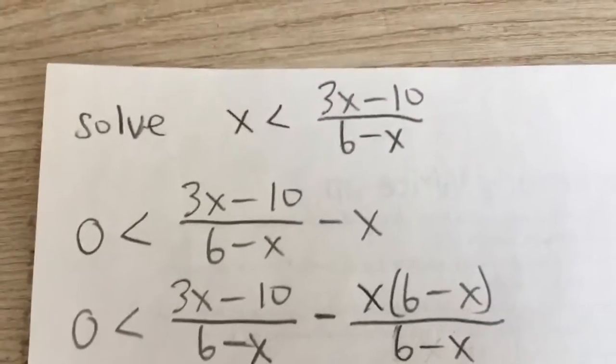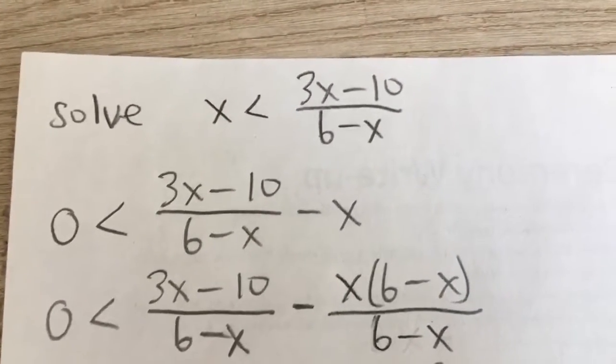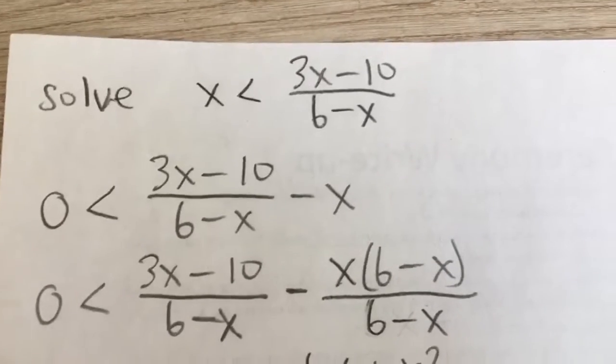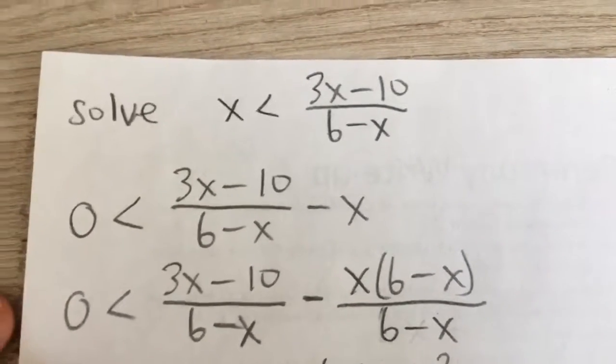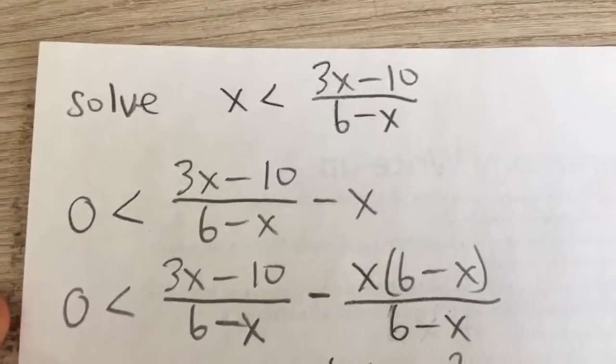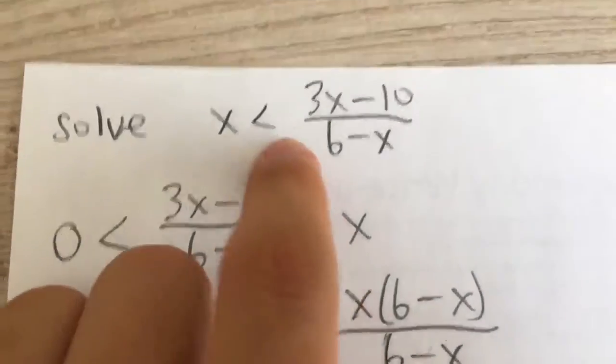Solve x is less than 3x minus 10 over 6 minus x. Now how we solve rational inequalities, we have to move all the terms to one side first and combine it into one fraction.